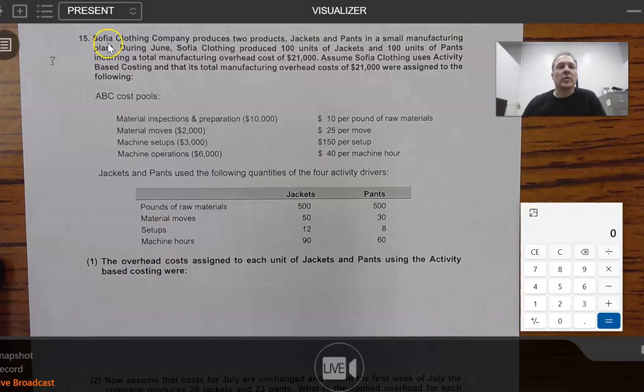So it says, Sophia Clothing Company produces two products, jackets and pants, in a small manufacturing plant. During June, Sophia Clothing produced 100 units of jackets and 100 units of pants, incurring a total manufacturing overhead cost of $21,000. Assume Sophia Clothing uses activity-based costing and that its total manufacturing overhead costs of $21,000 were assigned to the following. So we have our $21,000 right here. And then what this company has done is they have identified four cost pools that they believe to be responsible for the $21,000 or primary costs. So we've got materials inspection and preparation, $10,000, material moves $2,000, machine setups $3,000, and machine operations $6,000. And if we were to add these four figures up, we would come up with $21,000.